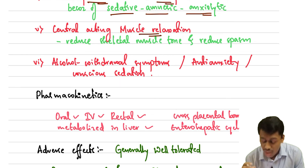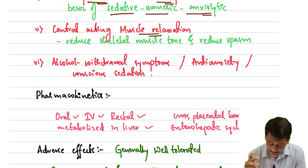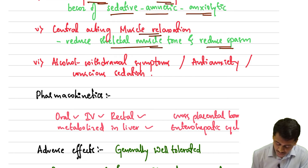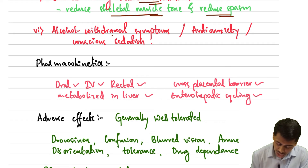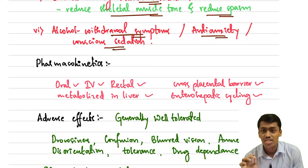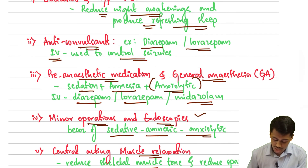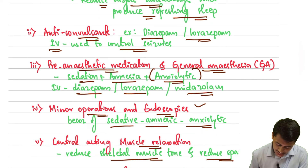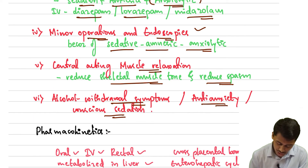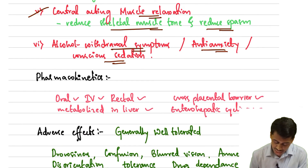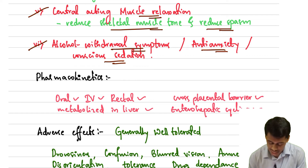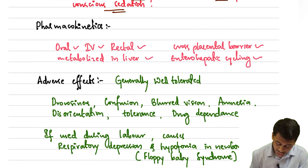Benzodiazepines are also helpful in centrally acting muscle relaxation — they reduce skeletal muscle tone and reduce spasms, which is also useful in general anesthesia. They are also used in alcohol withdrawal symptoms, anti-anxiety, and conscious sedation.